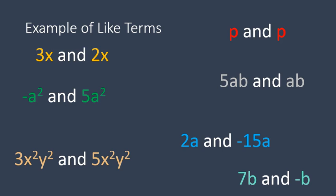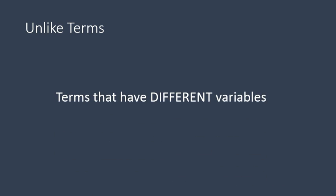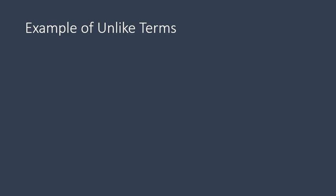Unlike terms are terms that have different variables. So any term that has different variables are going to be unlike terms. Let's look at some examples of unlike terms. These are pretty easy. A squared, negative a squared b and 7a squared. The variable a squared b is different than the variable a squared. P and P are different. If the variables are different at all, then they are not like terms or they're unlike terms.